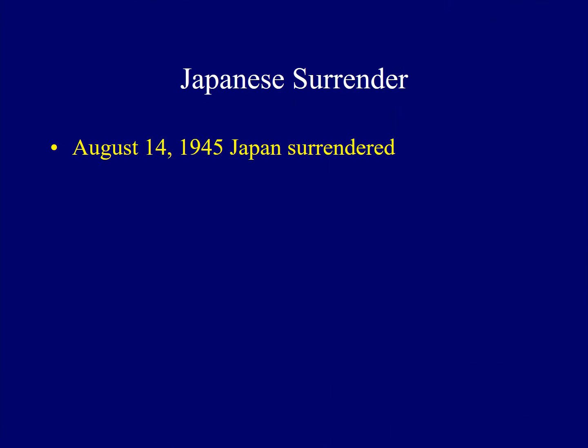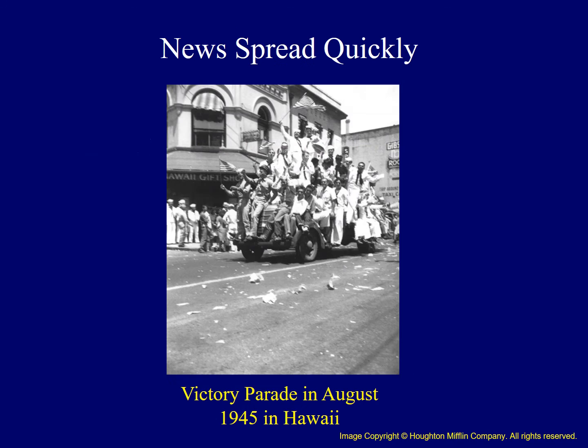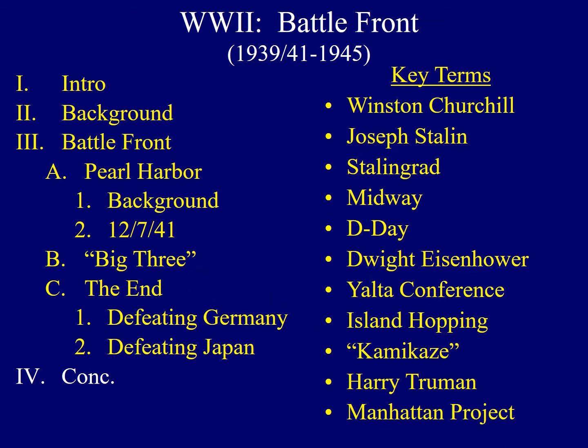A little less than a week later, on August 14, 1945, Japan surrendered and the Second World War came to an end. News of the Japanese surrender spread quickly, and we see a spontaneous celebration in the streets of Hawaii in August of 1945.